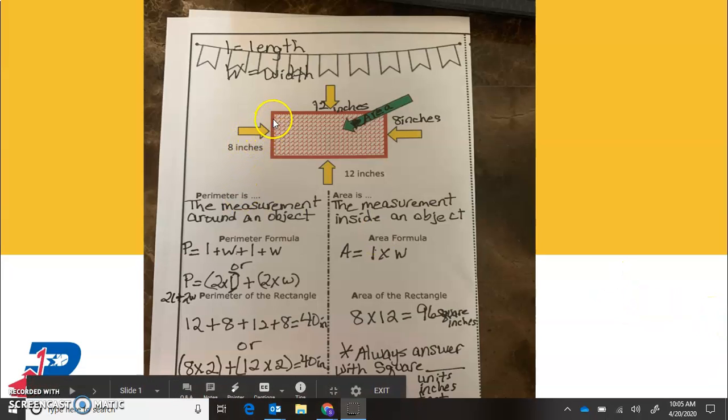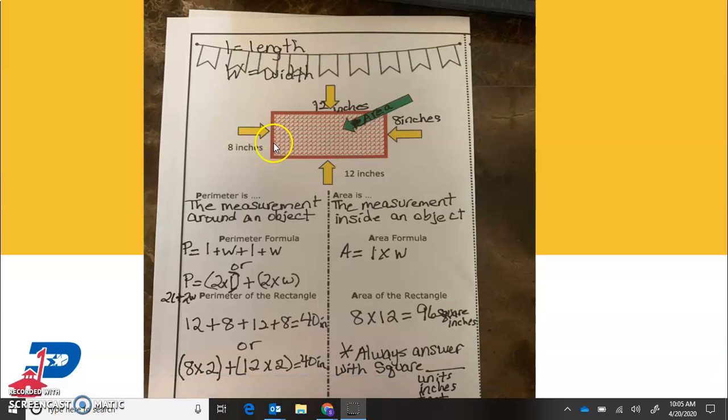Length is technically your vertical sides of the rectangle. Width is technically your horizontal sides. Honestly, it doesn't matter that much, as long as you have them labeled correctly as far as the dimensions go. And that's what we call these right here is dimensions. The length and the width, those are dimensions.